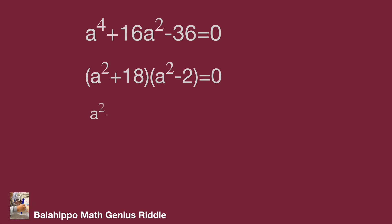Since a² + 18 ≠ 0, we have a² - 2 = 0, then a² = 2.